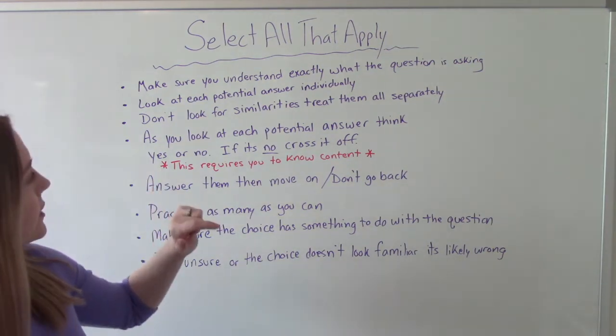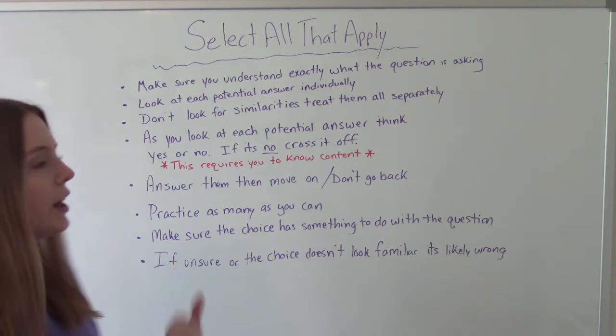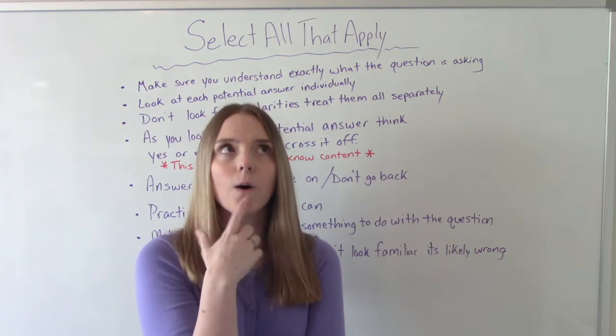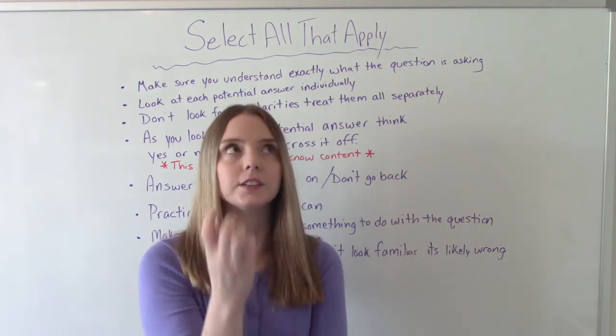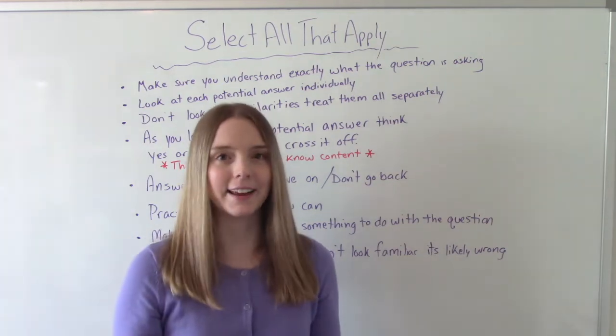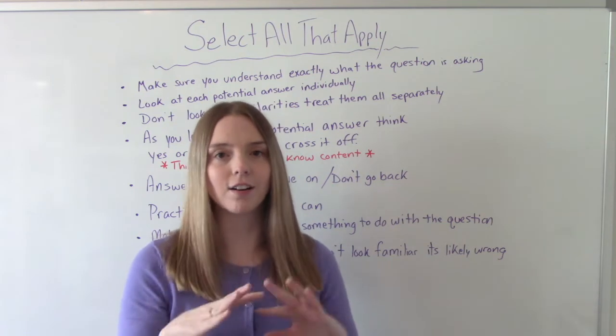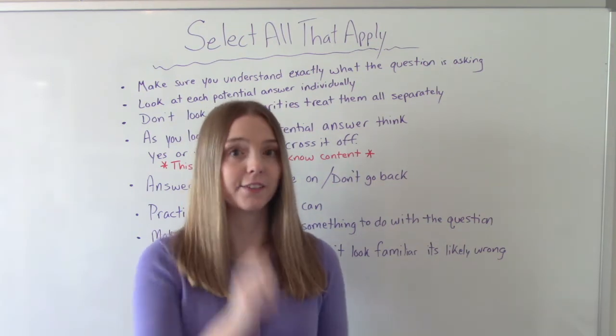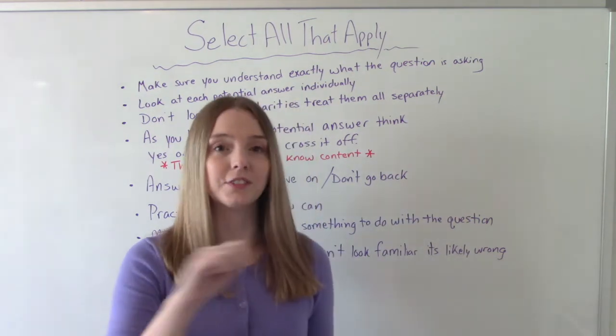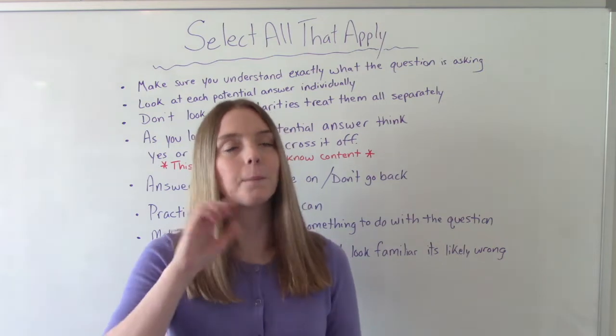Look at each potential answer and think, is this true? Is this false? Yes, no. So you'll read the question, then you'll read your first option, and you'll go, okay, does this apply to the question? Does this answer the question? Yes or no? And if it's yes, then it's probably the answer. You're going to circle it. If it's no, then cross it off. And if you can actually physically cross it off, there are actual studies that show that's better for your brain if we can actually physically cross things off. And if it's on the computer and you can't do that, just mentally cross it off.